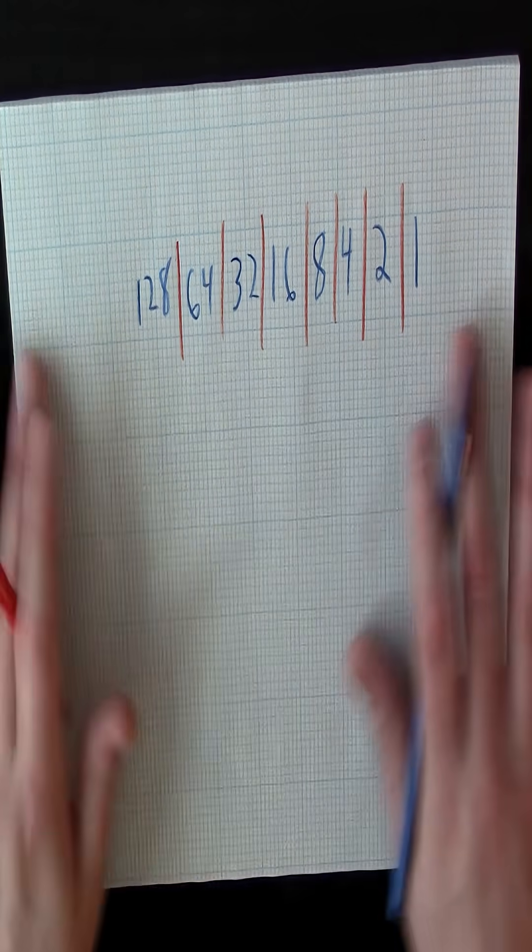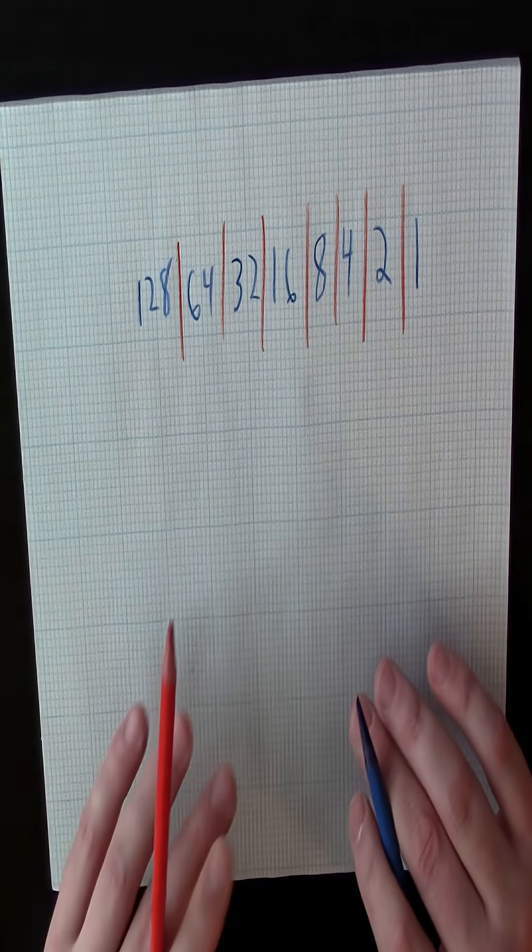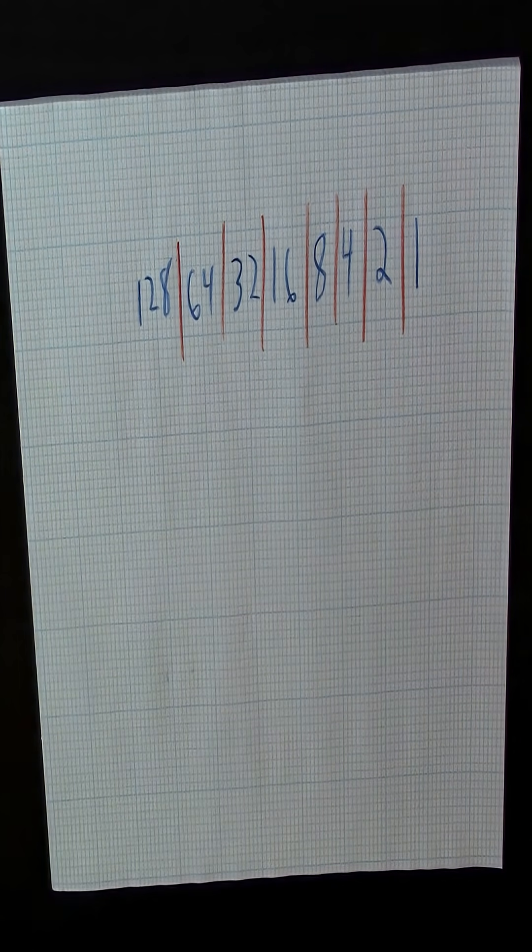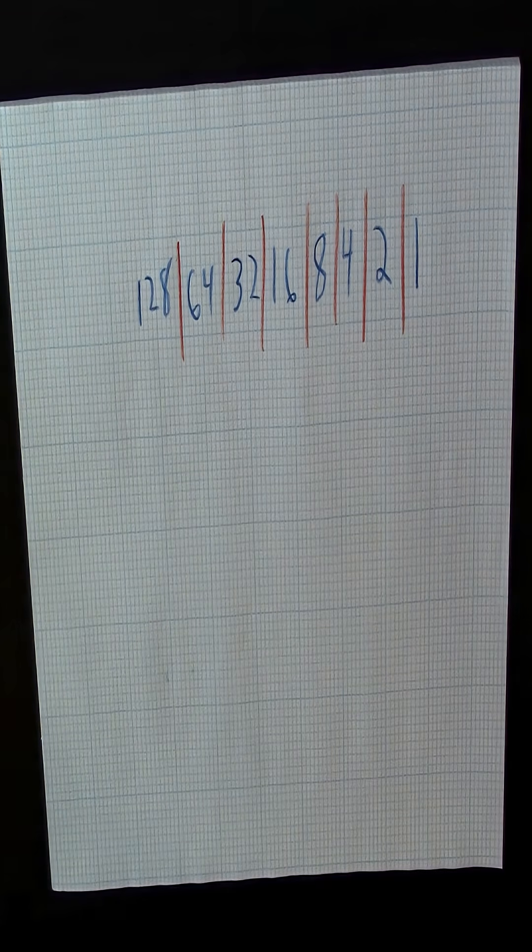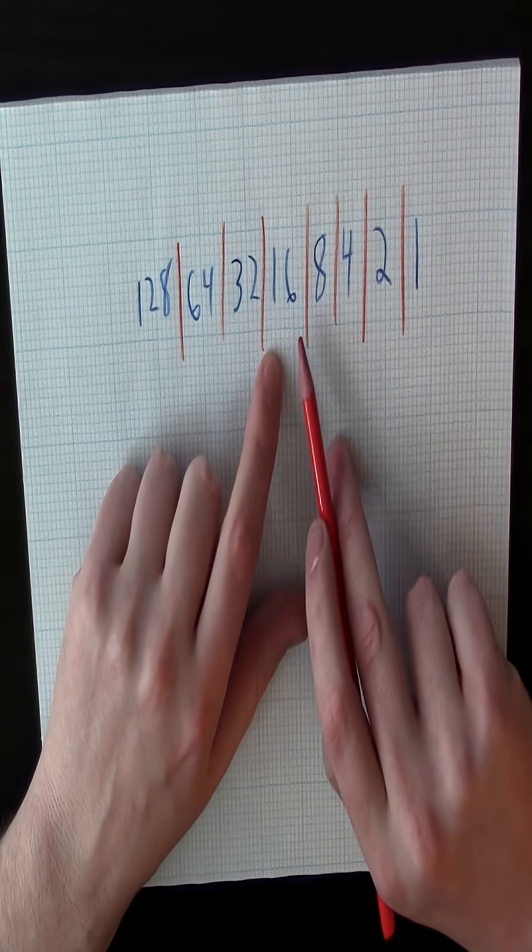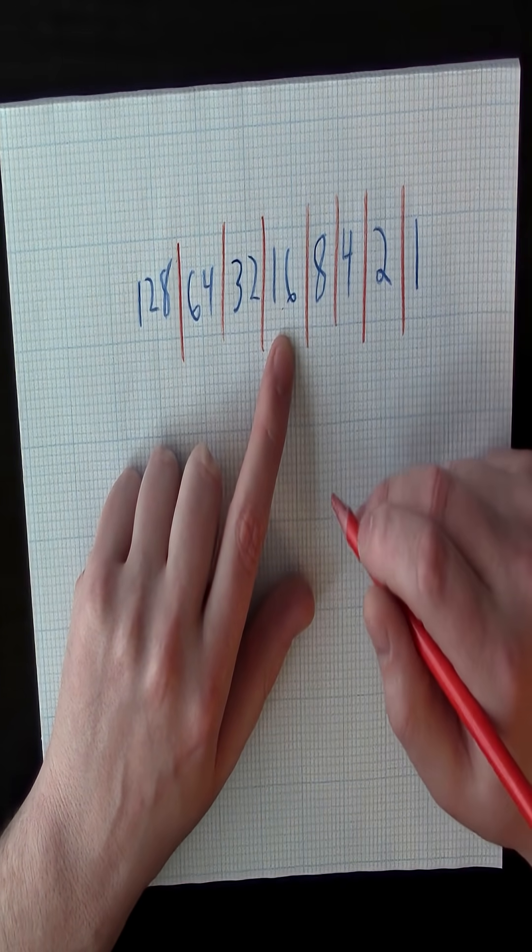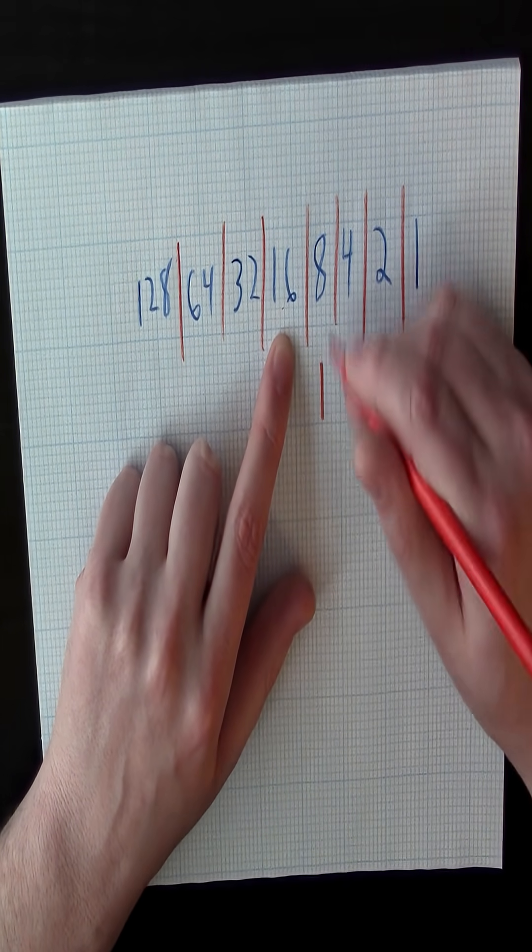How do you write all different sorts of numbers with this? Well, let me show you with the number, let's say 13. Okay, we don't have a 13. We have a 16. So I need to put one on eight.